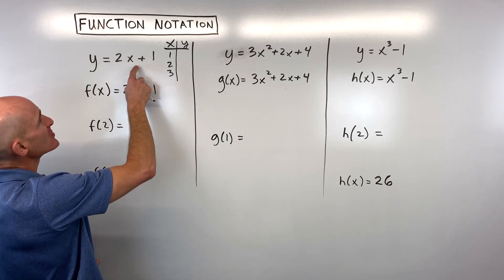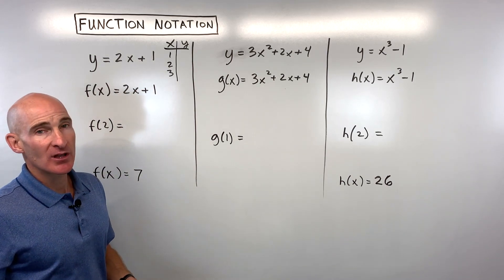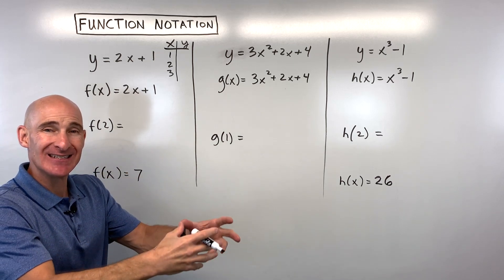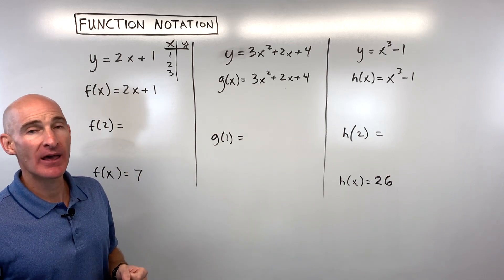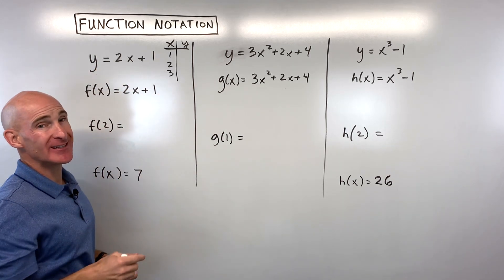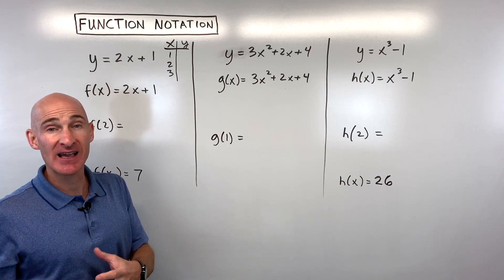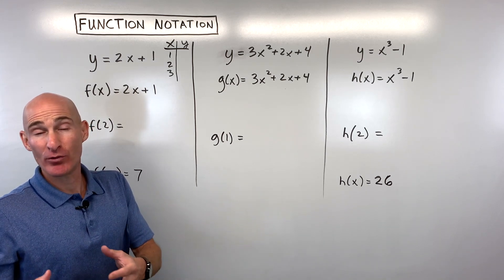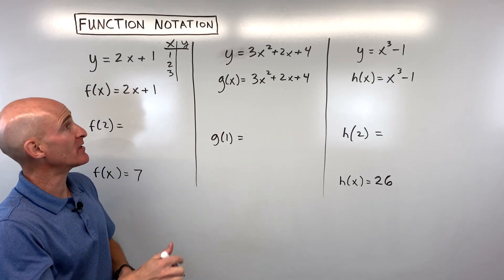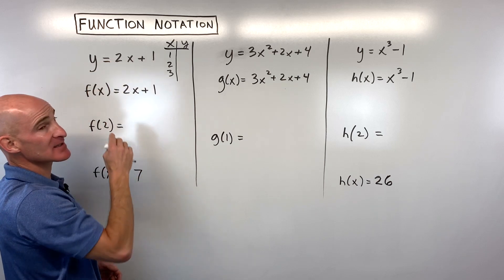You'll notice that the x variable we typically call the independent variable — it's what we put into the equation. And then the y is typically what we call the dependent variable; it depends on what you put in for x. So x is like the input, and y is the output.